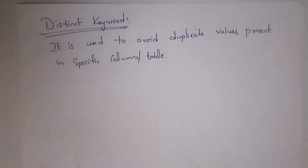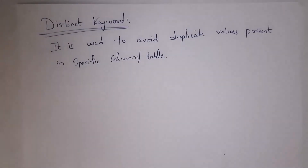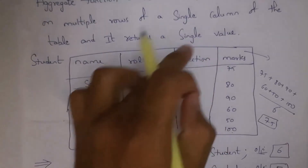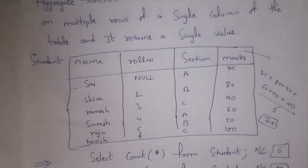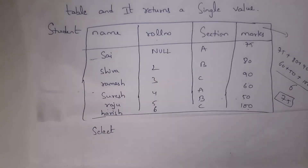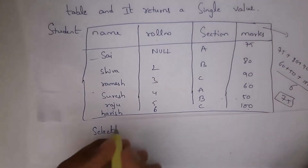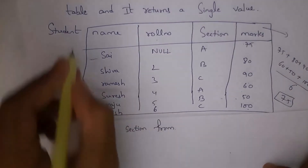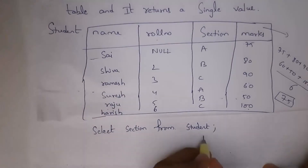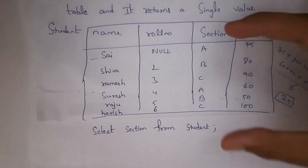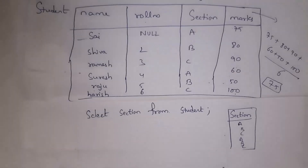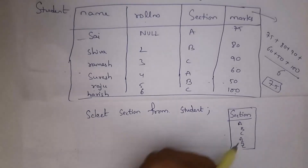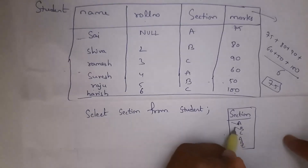Next I will explain the DISTINCT keyword. DISTINCT is used to avoid duplicate values from a particular column or table. For example, I want to see data in the section column: SELECT section FROM student. When I run this code it will display all data in the section column.